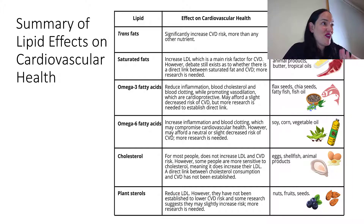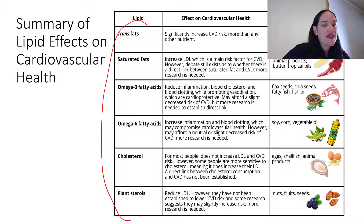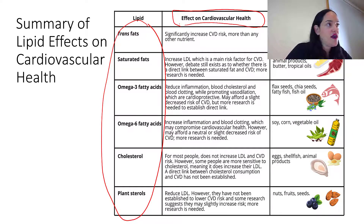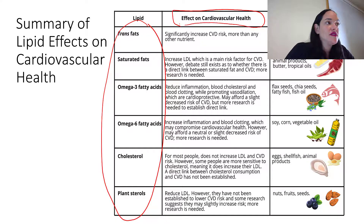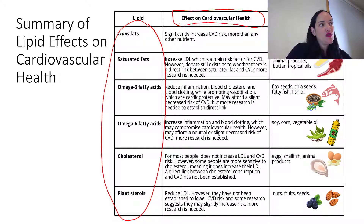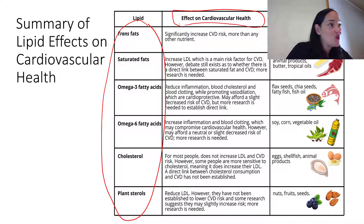It can be hard to keep track of which lipid affects cardiovascular disease risk in which way, which is why a summary slide covers the main types of lipids and their potential effects. An important reminder is that we're always still researching these things and new evidence keeps emerging. If you are worried about lipids in your diet, consume mostly whole foods and mostly plants, and you're probably going to be okay when it comes to lipids and your risk of disease.